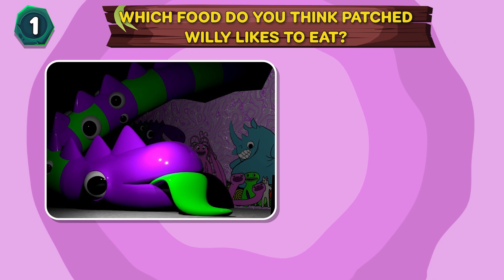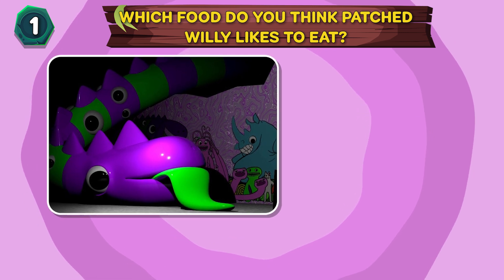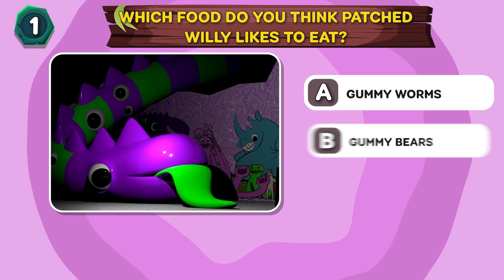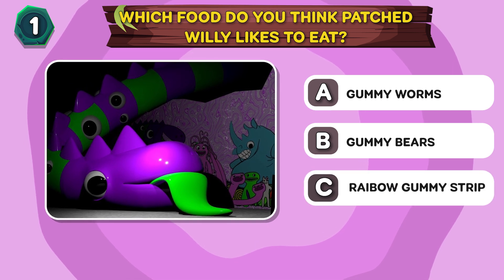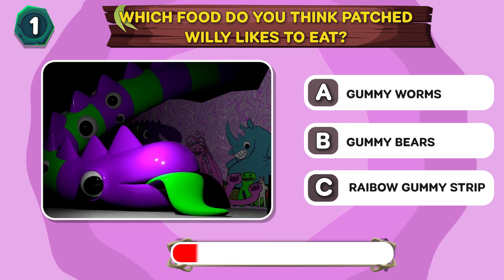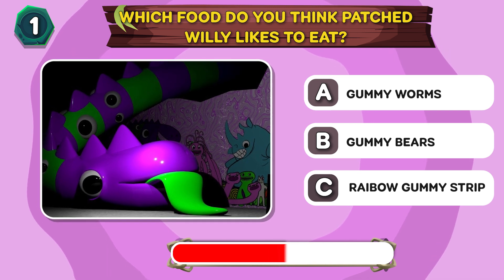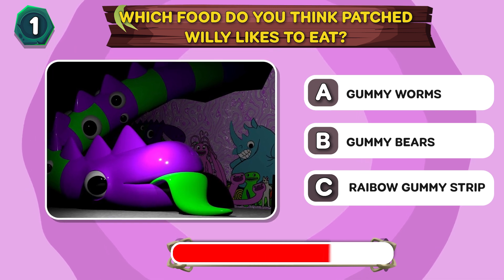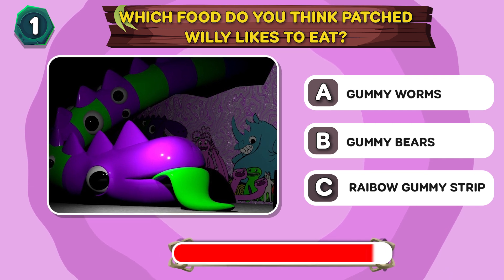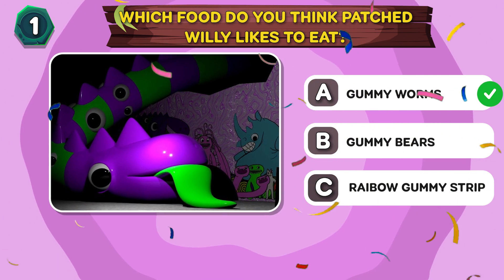Round 1. Which food do you think Patched Willy likes to eat? A. Gummy worms B. Gummy bears C. Rainbow gummy strips. The answer is A. Gummy worms.